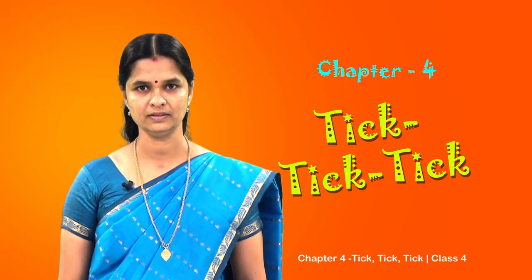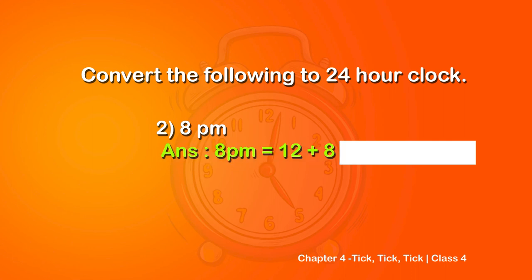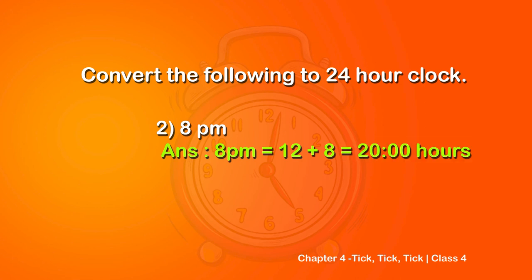The second question is 8 PM. It is PM - it is 8 o'clock at night. So what should we do? We need to add 12 to 8. It is 12 plus 8 equals 20. So it is 20 hours in 24-hour clock.